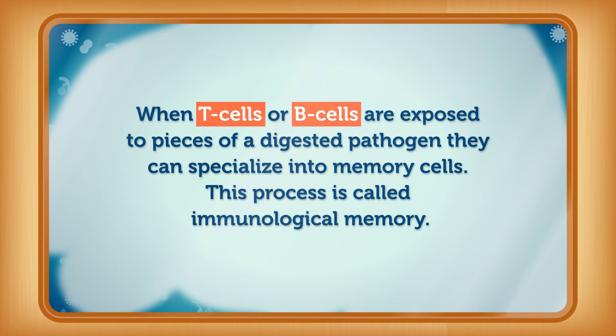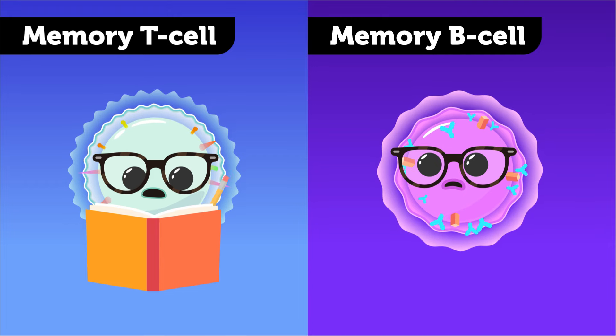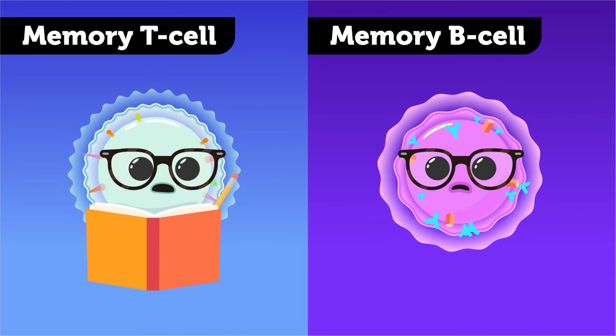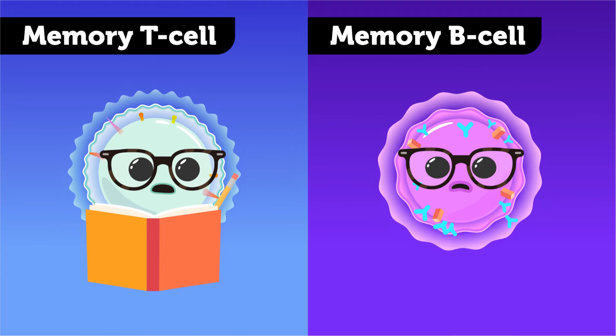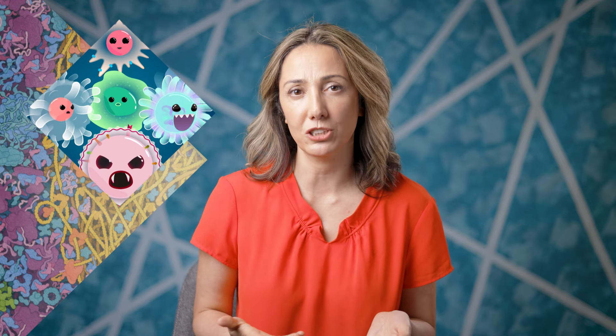Our adaptive immune system has a secret weapon that gives us an advantage against repeated infections from the same pathogen: it remembers pathogens it's seen before, so it can recognize them more quickly the next time. When T cells or B cells are exposed to pieces of a digested pathogen, they can specialize into memory cells — a process called immunological memory. Memory T cells are like historians, documenting the invader's attack and storing that data in our body's long-term memory. Memory B cells hang out in the body after the first immune response, ready to spot the pathogen and make antibodies quickly if it shows up again. It's this system that we take advantage of when we make vaccines — they help our T and B cells recognize a particular pathogen and prep to defend our bodies against it, without making us seriously sick.